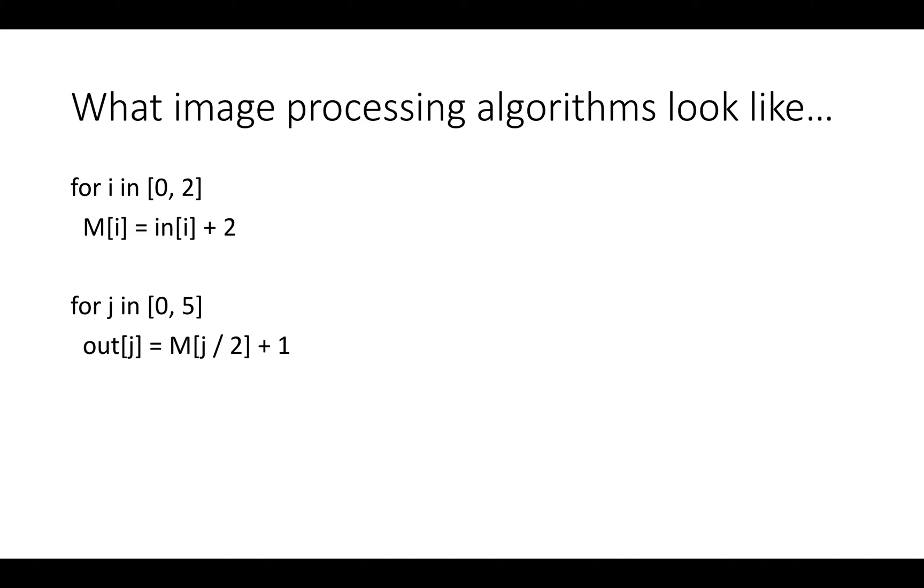Here's a cartoon of what image processing algorithms look like, and this is actually what's called an upsampling operation. We're going to have a first for loop, which goes from i in zero to two inclusive, and assigns the value of the buffer M[i] to be equal to the value of in[i] plus two.